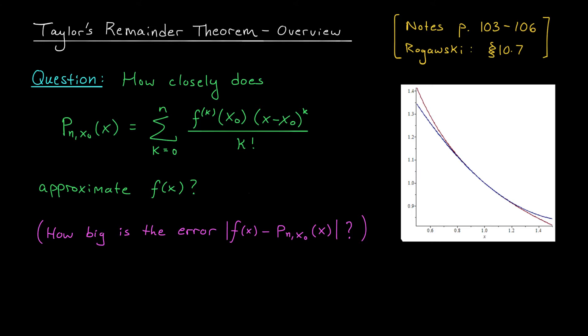We're faced with the difficult task of understanding the difference between our function f of x and its nth order Taylor polynomial, pn x0. In mathematics, when you're faced with a difficult task, it's often helpful to start with the simplest case. Here our simplest case will occur when pn x0 is just a constant. In this case, we're measuring the difference between f of x and the zeroth order Taylor polynomial, p0 x0. To find p0 x0, we plug n equals 0 into our formula and we just get the constant term f of x0.